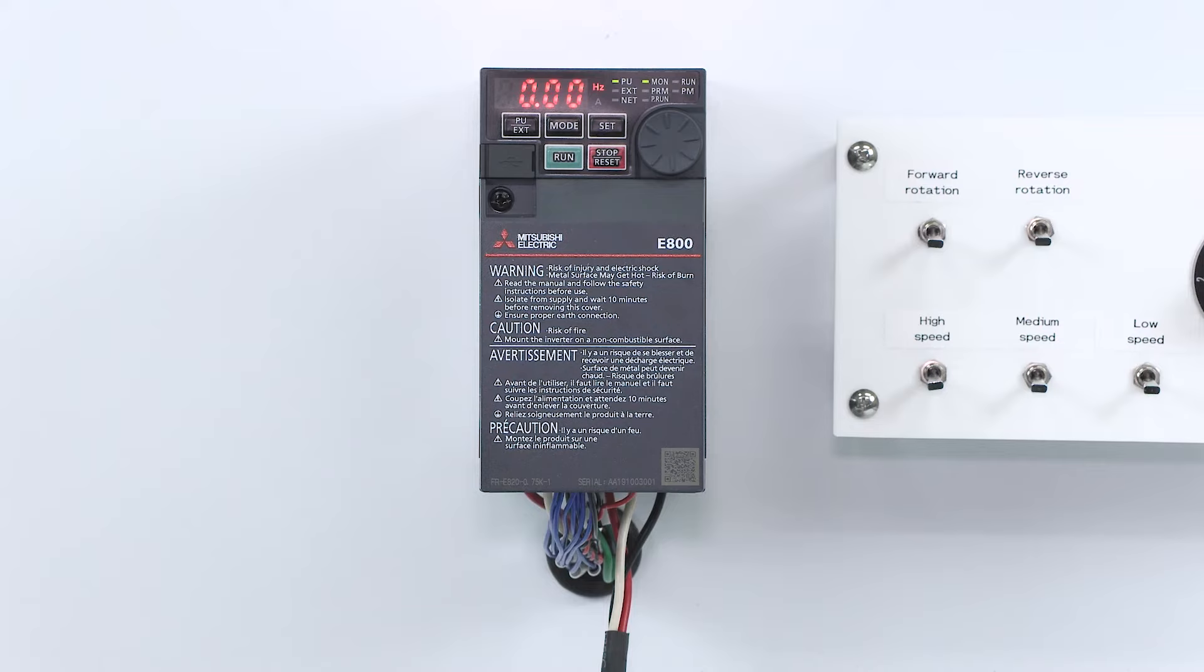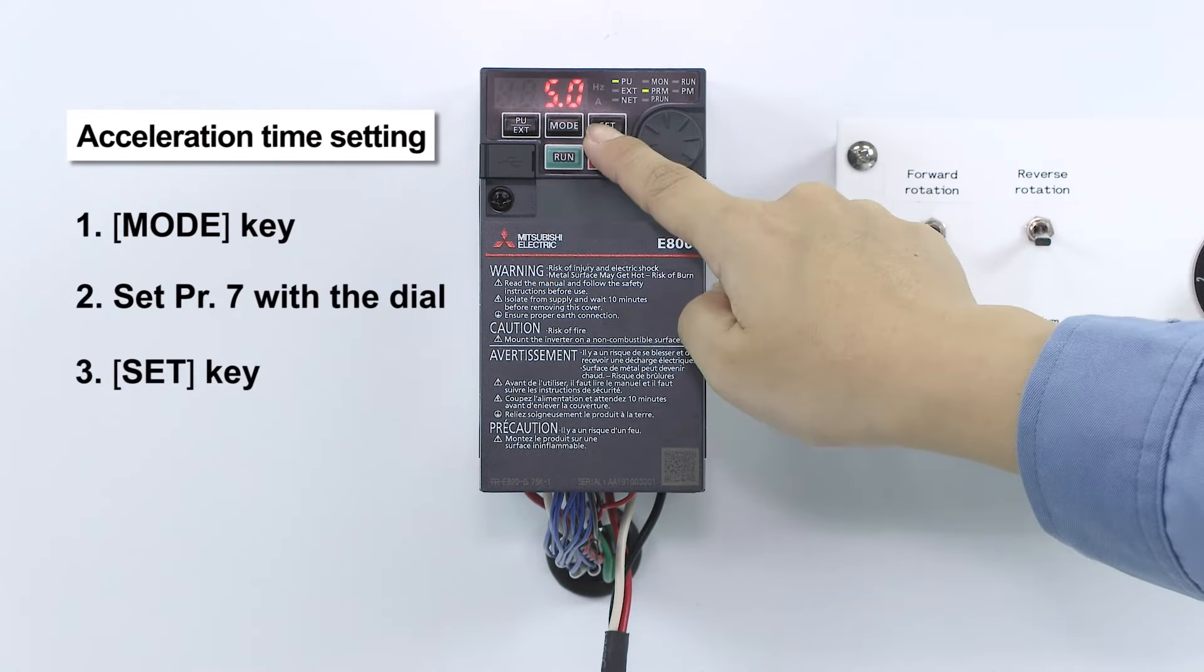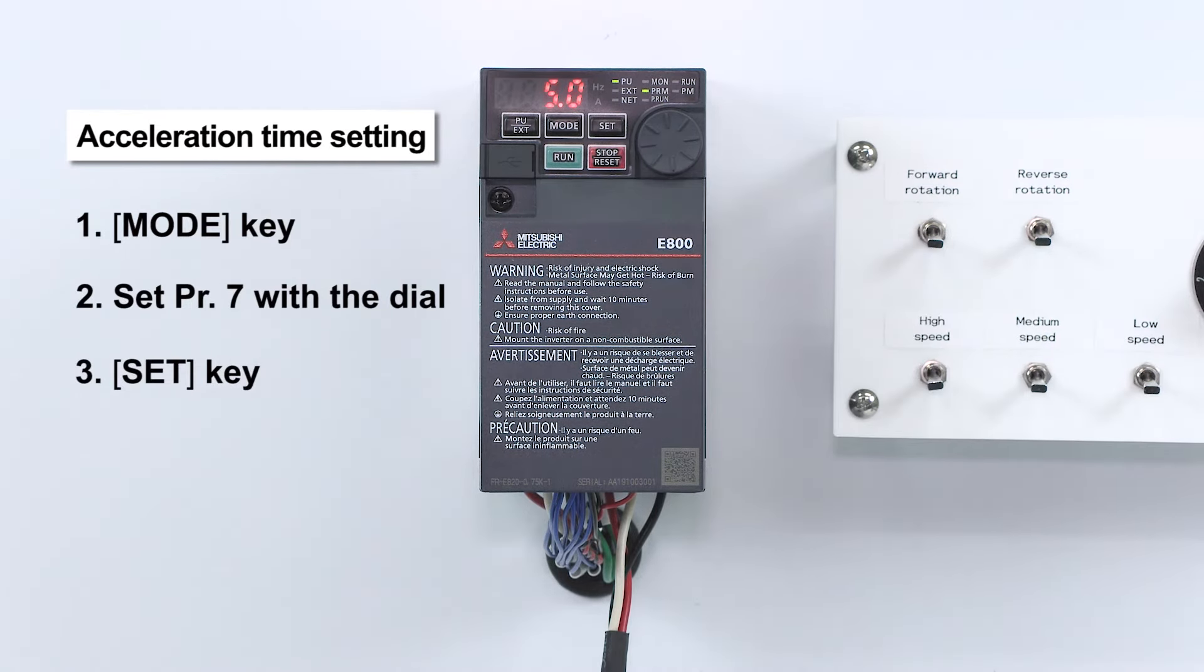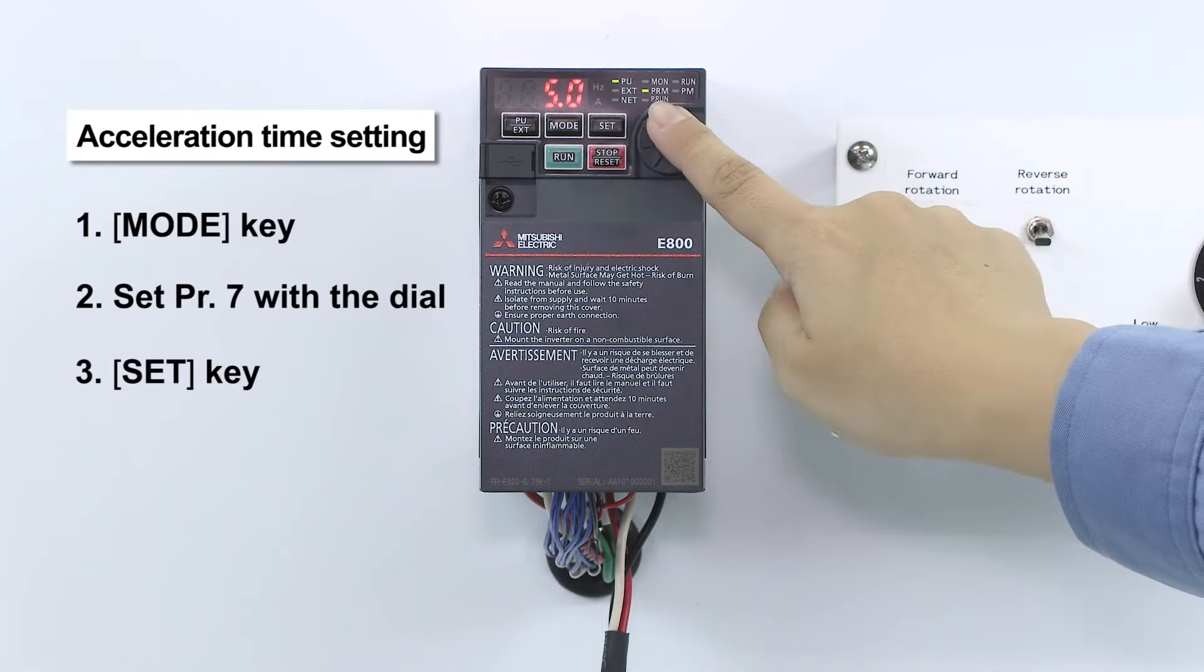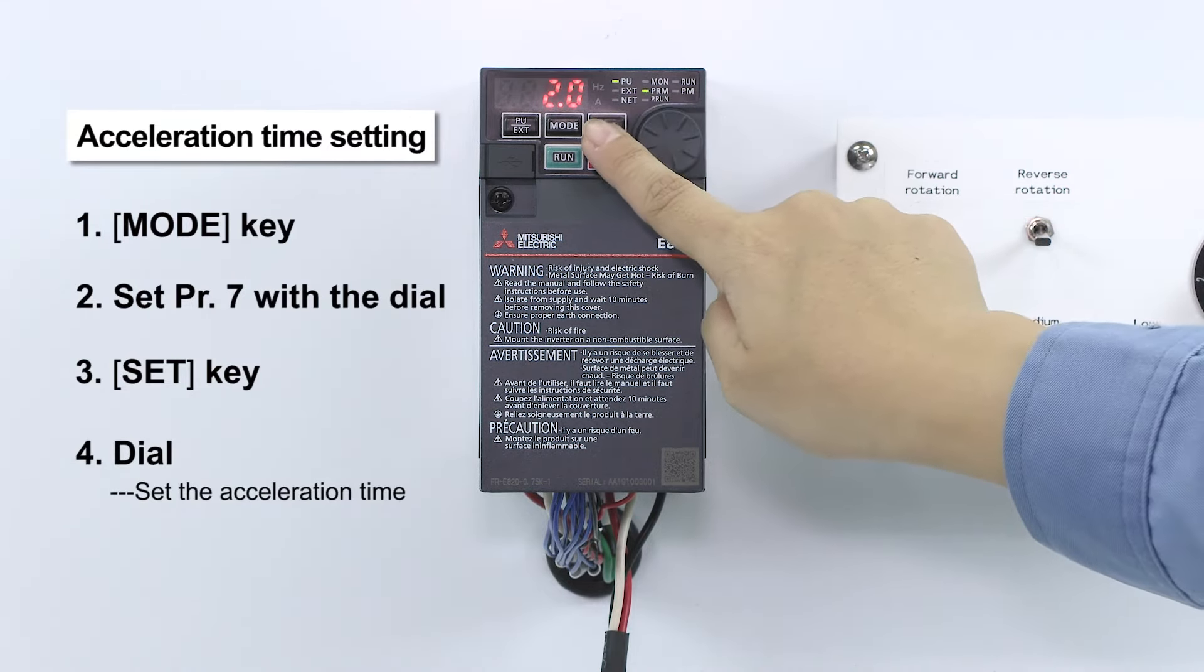To set parameter 7, push the MODE key. Select parameter setting mode and turn the dial to 7. Parameter 7 controls the acceleration time from when the motor starts until it reaches the selected frequency.